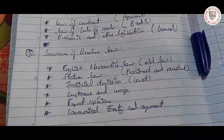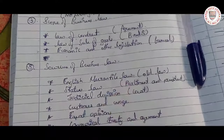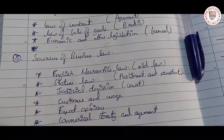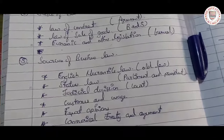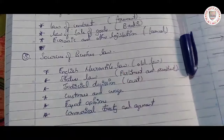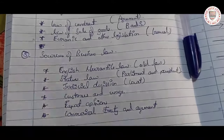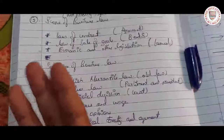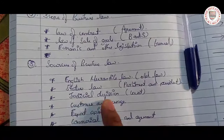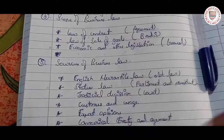Next, the sources of business law. First is English mercantile law — this is the oldest law followed in India. It actually came from British people, from the French Revolution era, and exists as English mercantile law. Next is statute law — the parliament passes a bill, it is signed by the president, and that is known as statute law.